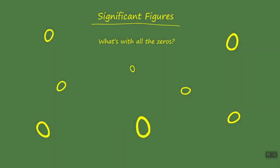Today we are going to talk about significant figures and how to determine the number of significant figures in an inexact number. We will discuss five guidelines that we will use to determine the number of significant figures. We will review each guideline and then look at one or more examples that illustrate how it is to be used. Additionally, we will introduce the use of scientific notation to aid us in reporting the desired number of significant figures.